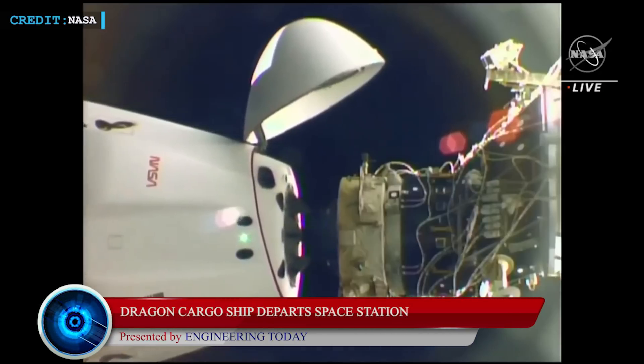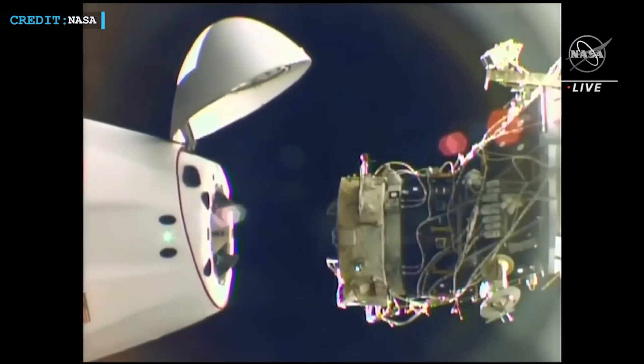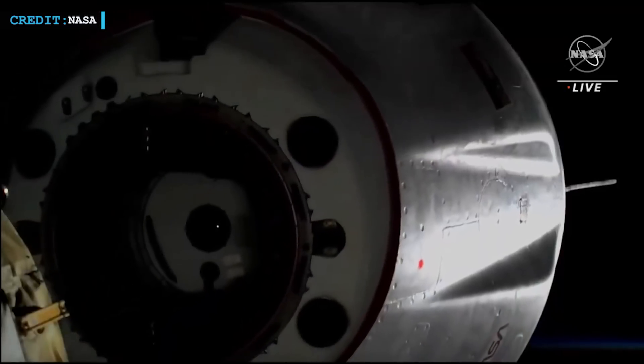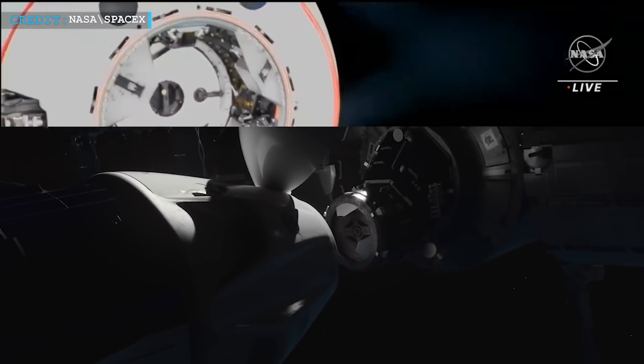In order to prepare for a weekend splashdown, SpaceX Dragon cargo ship launched from the International Space Station on Friday, August 19, and started its return journey to Earth. At 11:05 a.m. Eastern Daylight Time, 3:05 p.m. Greenwich Mean Time...